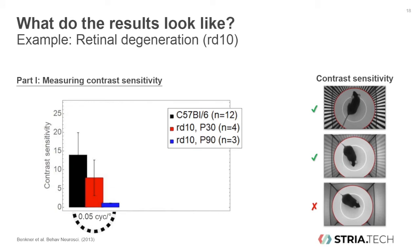This graph shows the contrast sensitivity of wild-type mice in black and of RD10 mice at two different ages — one month old in red and three months old in blue. It is clear that the contrast sensitivity of RD10 animals is impaired compared to wild-type animals and that their vision becomes worse over time.